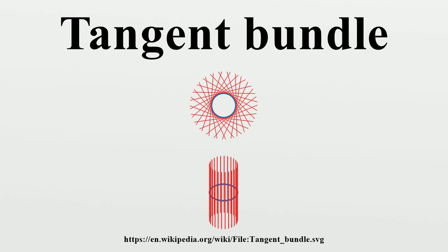The simplest example is that of R^n, in which case the tangent bundle is trivial. Another simple example is the unit circle S^1; the tangent bundle of the circle is also trivial and isomorphic to S^1 times R, which geometrically is a cylinder of infinite height. The only tangent bundles that can be readily visualized are those of the real line R and the unit circle S^1, both of which are trivial. For two-dimensional manifolds the tangent bundle is four-dimensional and hence difficult to visualize. A simple example of a non-trivial tangent bundle is that of the unit sphere S^2, which is non-trivial as a consequence of the Hairy Ball theorem. Therefore, the sphere is not parallelizable.